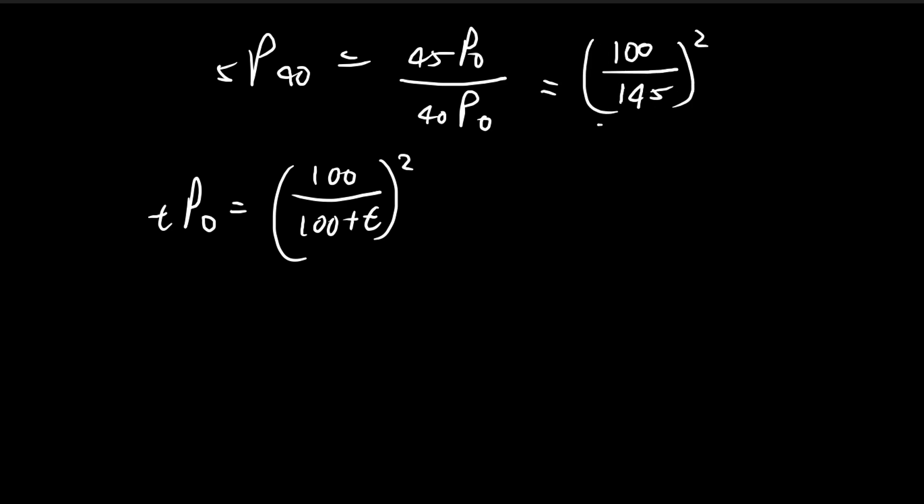We have 100 divided by 145 squared divided by 100 divided by 140 squared. So this becomes 140 divided by 145 squared.